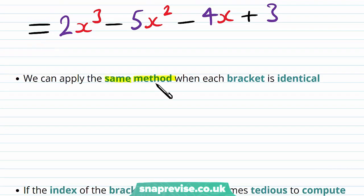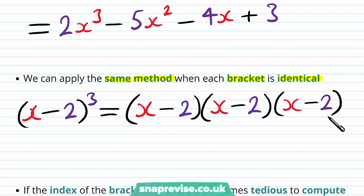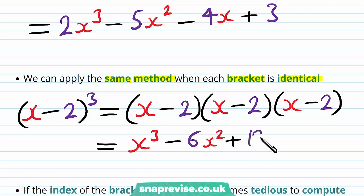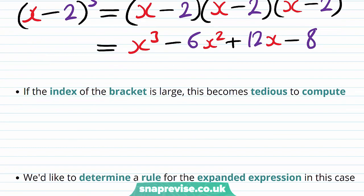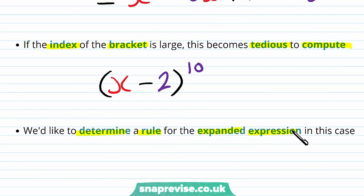We can apply the same method when each bracket is identical. So if we wanted to expand (x minus 2) all cubed, then we can start by writing this as the product of (x minus 2) three times, and then apply the same process to obtain x cubed minus 6x squared plus 12x minus 8. Now if the index of the bracket is large, this becomes tedious to compute. Let's say we wanted to work out (x minus 2) to the power of 10 — this would take a very long time using the previous method. We'd like to determine a rule for the expanded expression in this case.